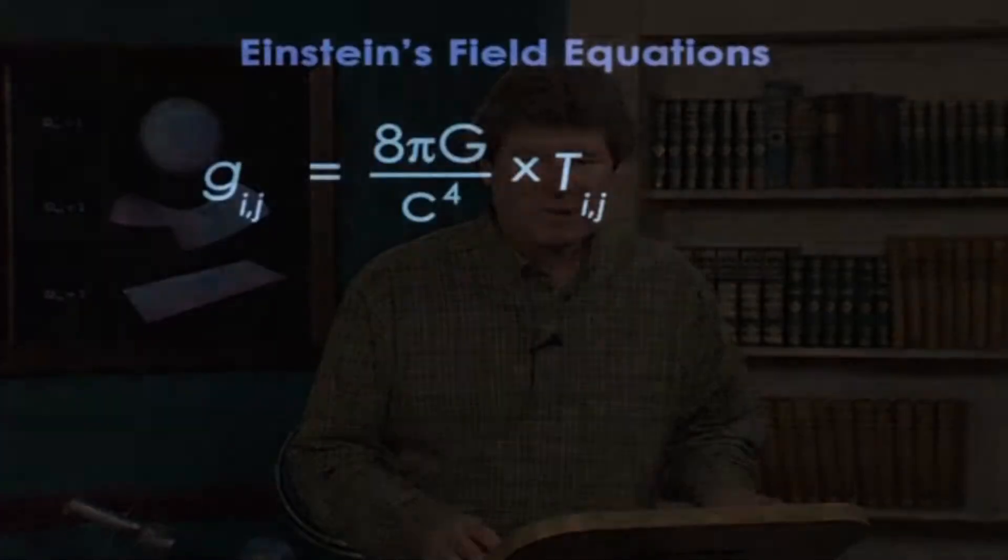This is, in fact, his second most famous equation, the first being, of course, E=mc². Here it is. It's called Einstein's Field Equations, and it reads, G_ij equals 8πG/c⁴ times T_ij.